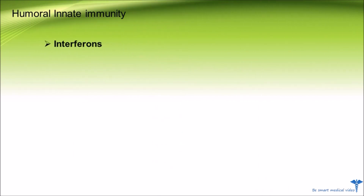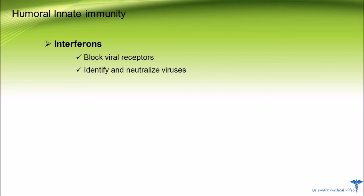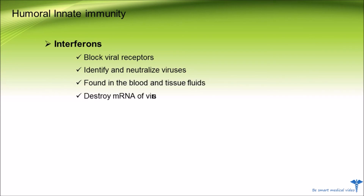Number two is interferons. Interferons are glycoproteins that block viral receptors and limit virus replication in cells. They usually identify and neutralize viruses but are not virus-specific. Interferons are found in the blood and tissue fluids, and they inhibit viral protein synthesis and destroy the mRNA of viruses.